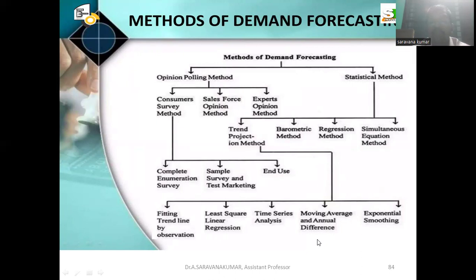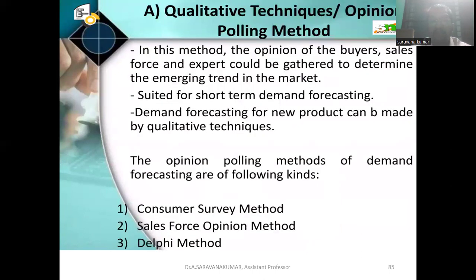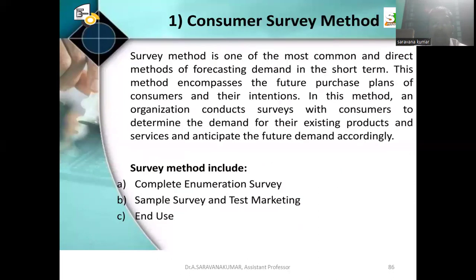Qualitative techniques are grouped under the opinion polling method. In this method, the opinions of buyers, sales force, and experts are gathered to determine the emerging trend in the market. It is suited for short-term demand forecasting, and demand forecasting for new products can also be made using qualitative techniques. The opinion polling methods include the consumer survey method, salesforce opinion method, and Delphi method.